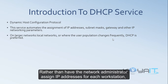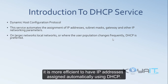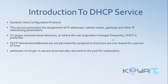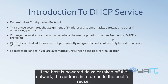Rather than have the network administrator assign IP addresses for each workstation, it is more efficient to have IP addresses assigned automatically using DHCP. DHCP-distributed addresses are not permanently assigned to hosts but are only leased for a period of time. Addresses no longer in use are automatically returned to the pool for reallocation if the host is powered down.